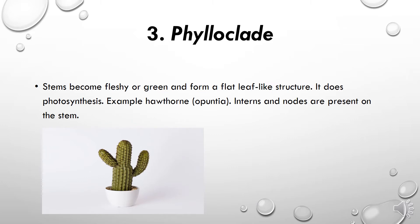Phylloclade is a thick, fleshy, green and flat leaf-like structure that performs photosynthesis. Examples include Opuntia and cactus. Cactus is also an example of phylloclade — a thick and fleshy stem, also called a succulent stem.